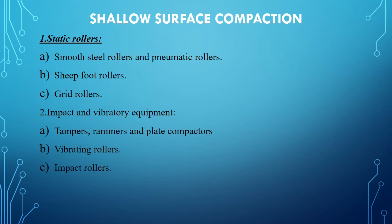In shallow surface compaction, two types of rollers are employed: static rollers and impact or vibratory equipment. The static rollers include smooth steel rollers, pneumatic rollers, and sheepfoot rollers. The impact and vibratory equipment includes tampers, rammers, plate compactors, vibrating rollers, and impact rollers.